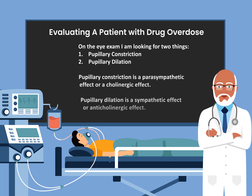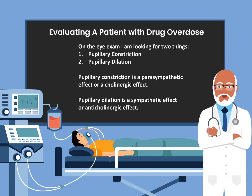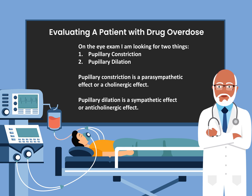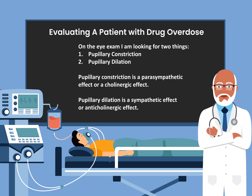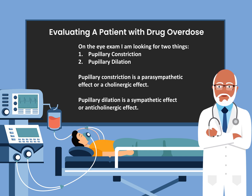On the eye exam, I am looking for two things. Number one, pupillary constriction, and number two, pupillary dilation. Pupillary constriction is a parasympathetic effect or a cholinergic effect. Pupillary dilation is a sympathetic effect or an anticholinergic effect.